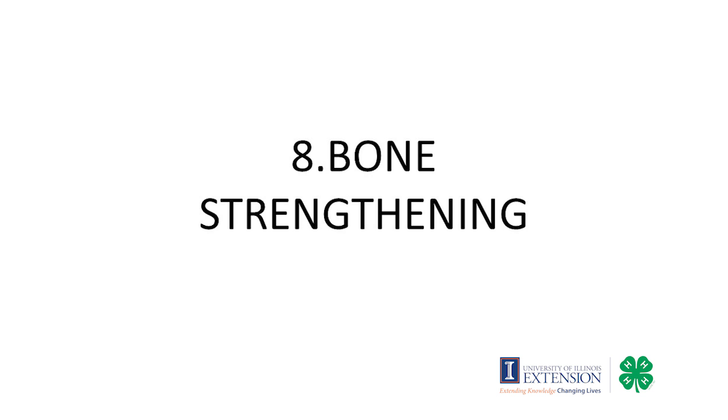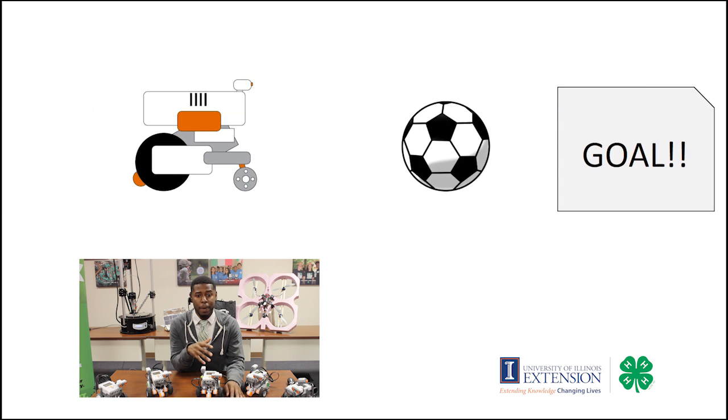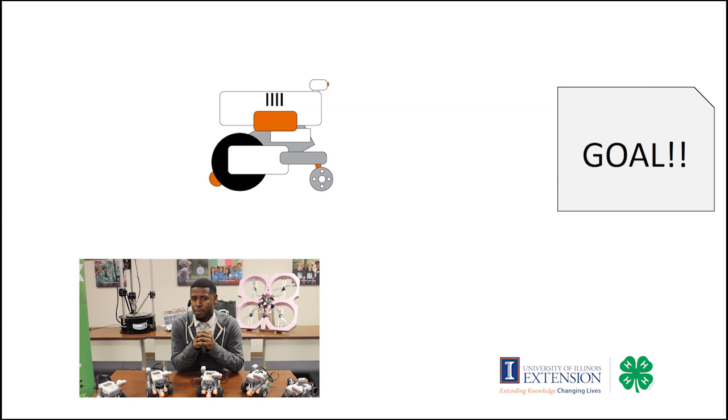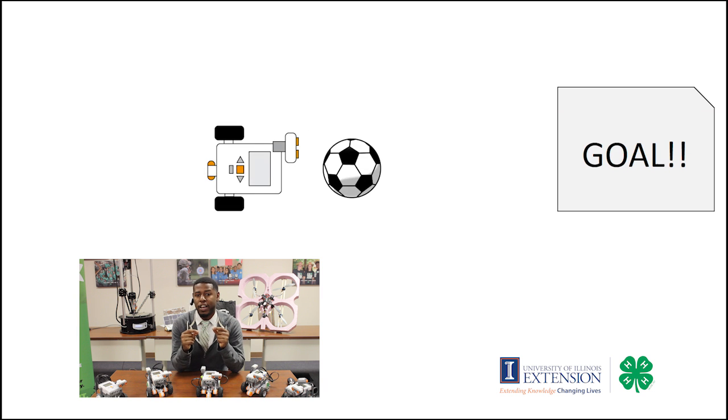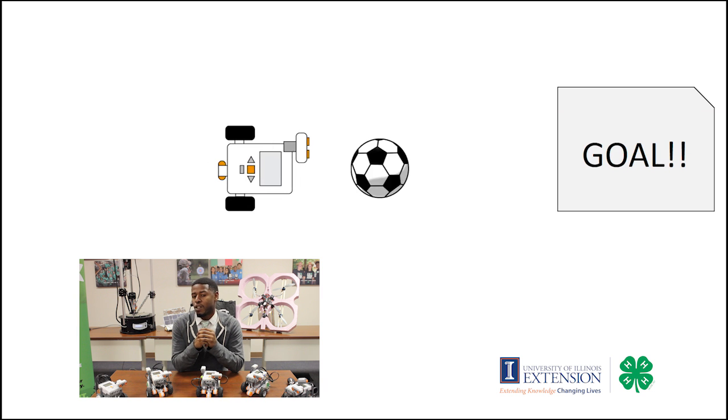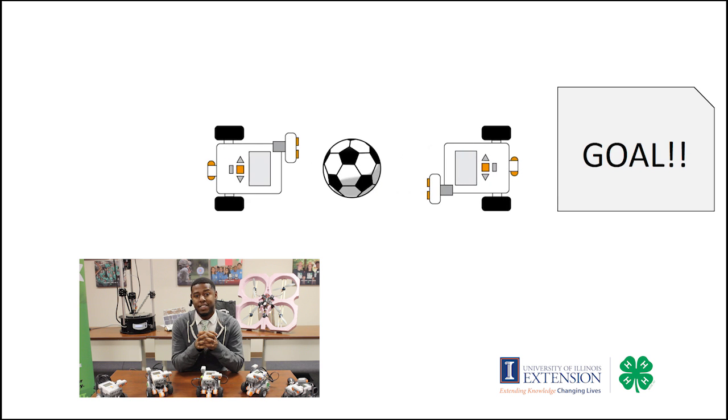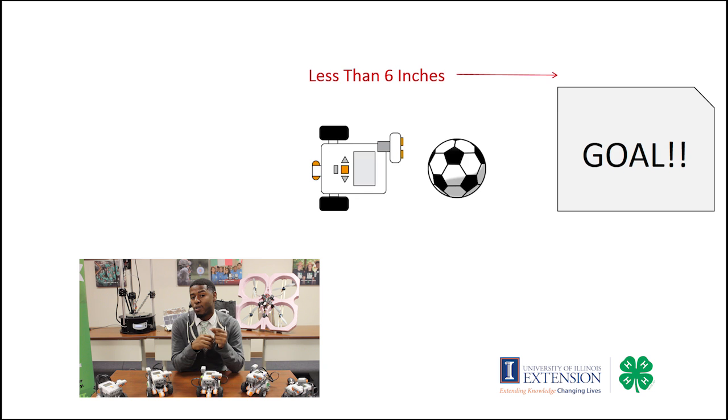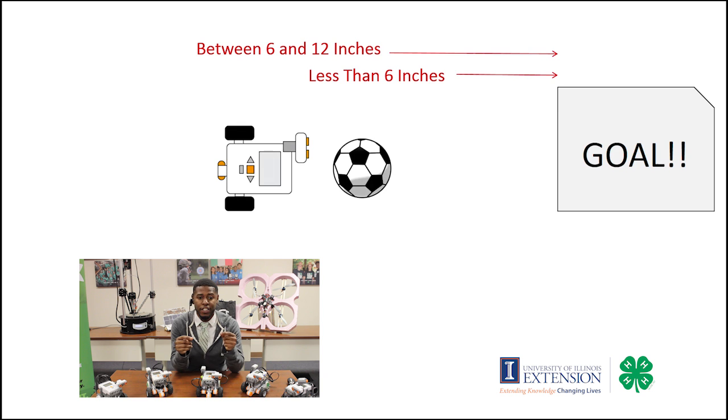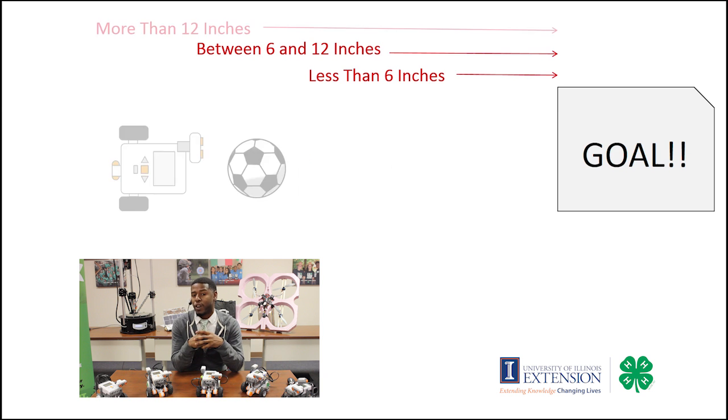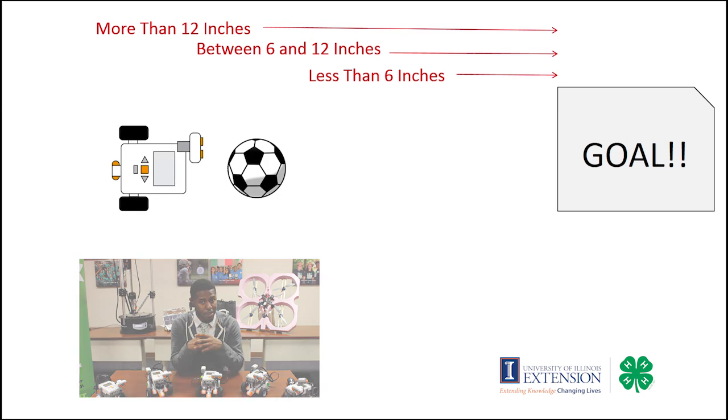Bone strengthening as demonstrated by playing soccer. In this task, your health bot will score a goal from a variety of points on the field. Your health bot can score a goal from each location only once unless the ball is retrieved by a second robot. Points will be awarded if the robot scores a goal less than six inches, with more points being awarded if the robot scores a goal between six inches and 12 inches, and even more points awarded if the distance is greater than 12 inches.